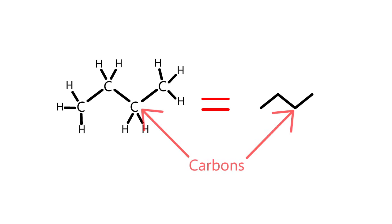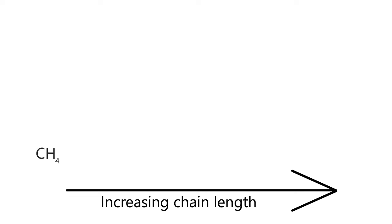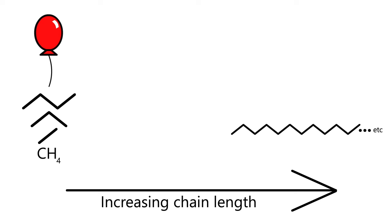Hydrocarbons are a class of molecules composed of chains of carbon. Short, light chains like methane, ethane, propane, and butane tend to be gases. Long, heavy chains can range from viscous liquids to even solids.